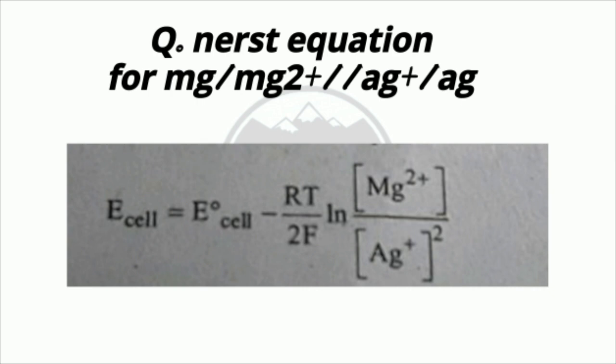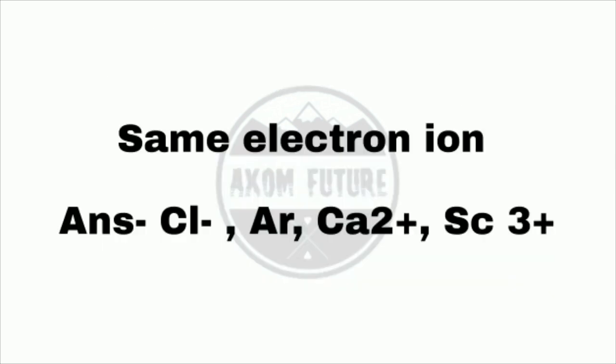Question 7: Which ion is isoelectronic? The options include Sc²⁺, Sc³⁺, and others. The correct isoelectronic ion has 18 electrons.